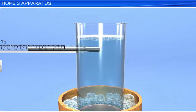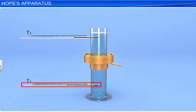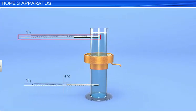The ice floating on the surface of water indicates that the density of ice is less than the density of water at 4 degrees Celsius. The temperature in thermometer T1 remains at 4 degrees Celsius, while that in thermometer T2 falls to 0 degrees Celsius. This is due to the anomalous behavior of water.